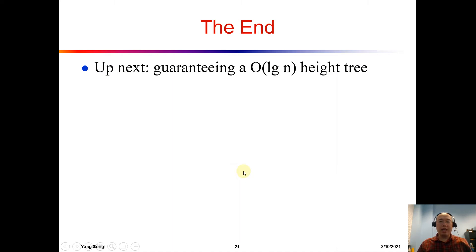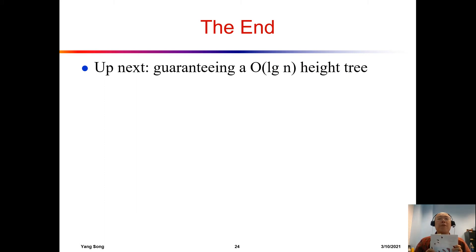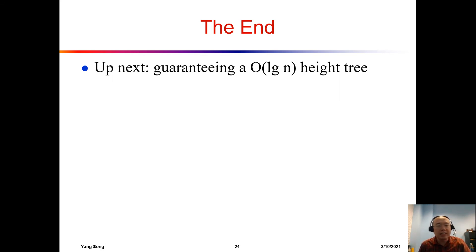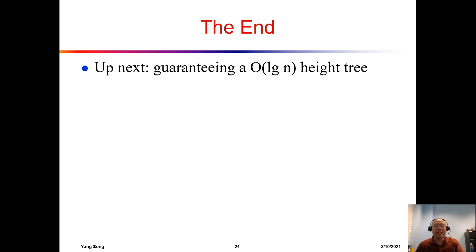This is the end of today. You do want to continue reading section 12.3 of the book. In the next section, we will talk about how we can make a binary search tree balanced. We do want to have a balanced binary search tree instead of super unbalanced ones, and then we can have faster searches. I will see you in the next lecture. Bye-bye.